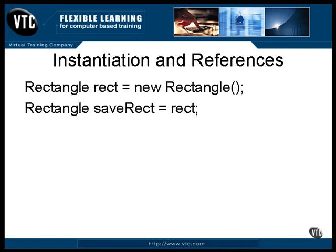You can refer to members of the rectangle object by using a dot reference. For example, if the rectangle object has a method named setWidth, you could call it like this. Putting the address of an object in a reference and then using the name of the reference in a statement is the same as addressing that object directly. In fact, the only possible way to address an object is to have its address stored in a reference.